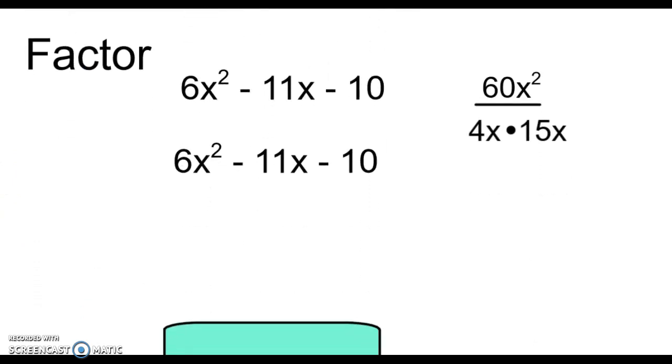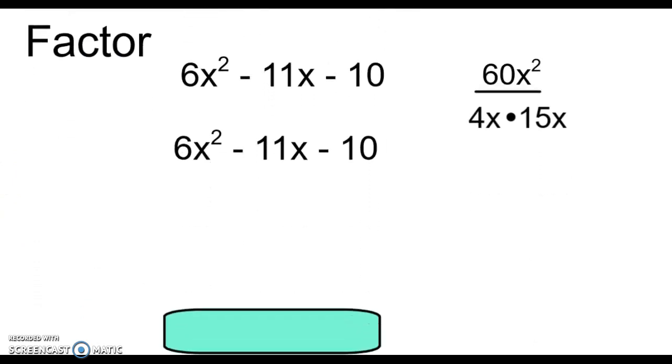And working the other way, we have factoring. We start off with this, we're going to factor it. Well, we are going to multiply the 6 times the 10, get 60x². We are then looking for factors of this that do this right here, subtract to give you this middle term. So we are going to change that -11 using these two factors.